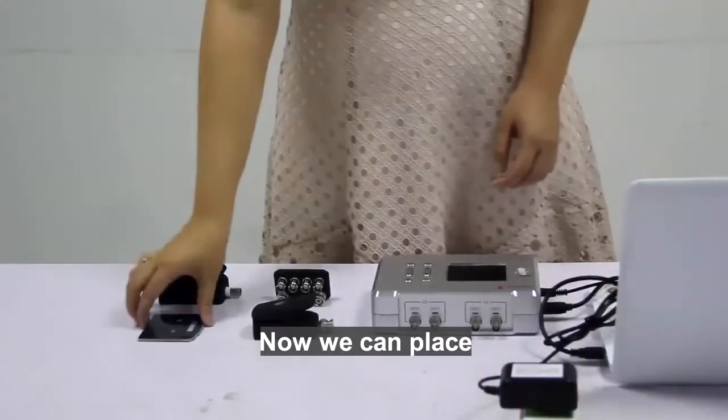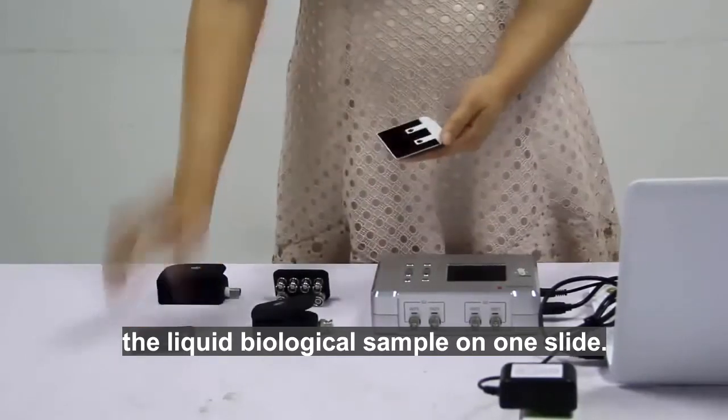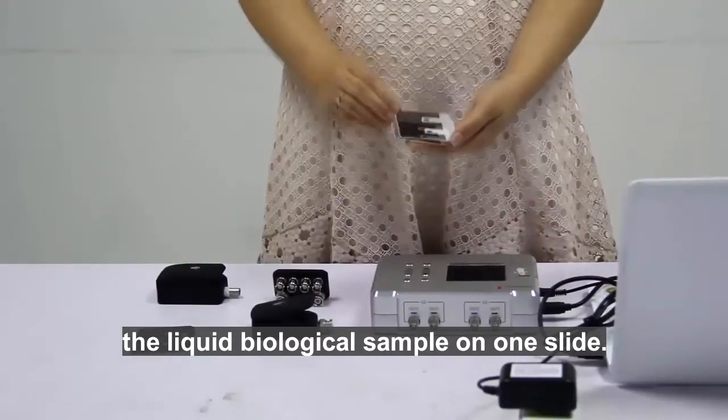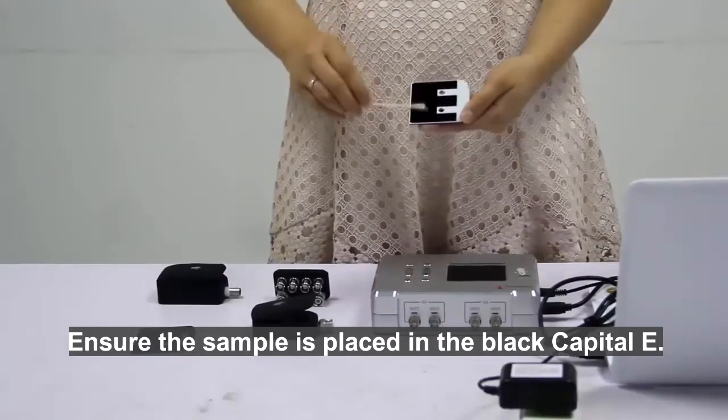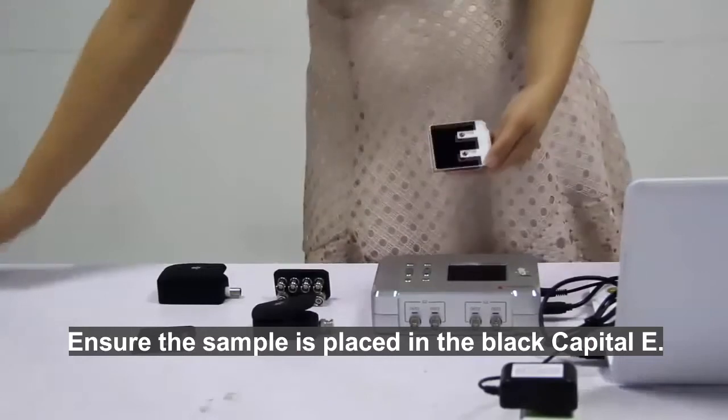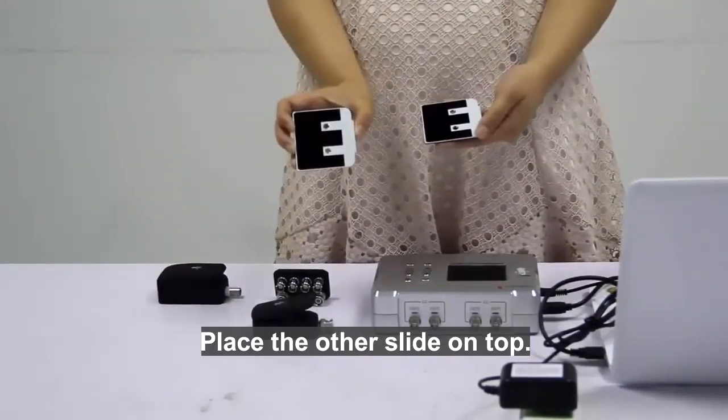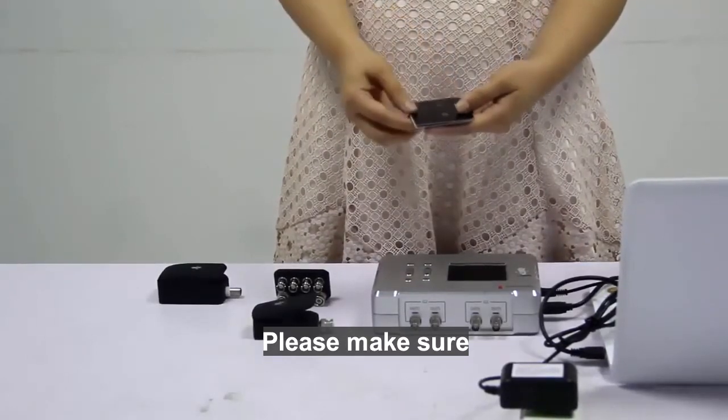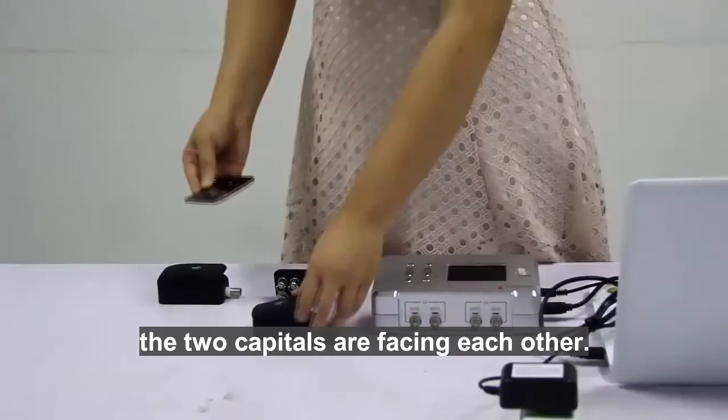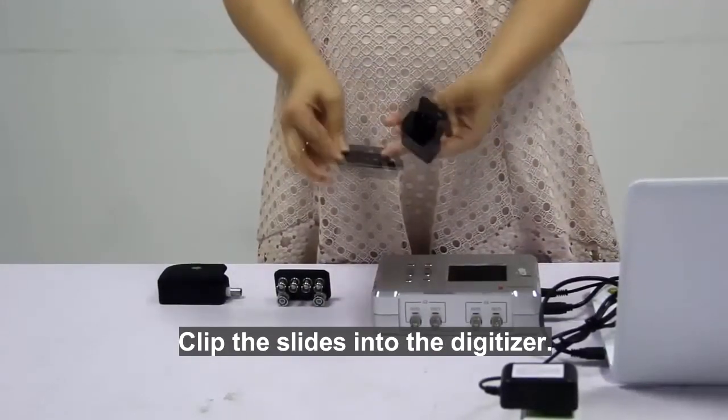Now we can place the liquid biological sample on one slide. Ensure the sample is placed in the black capital E. Place the other slide on top, making sure the two capitals are facing each other. Clip the slides into the digitizer.